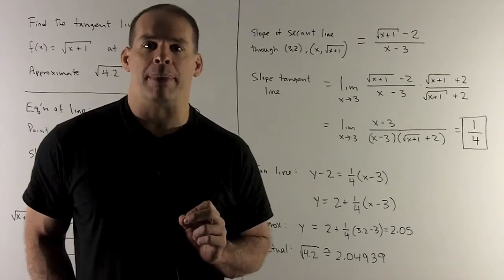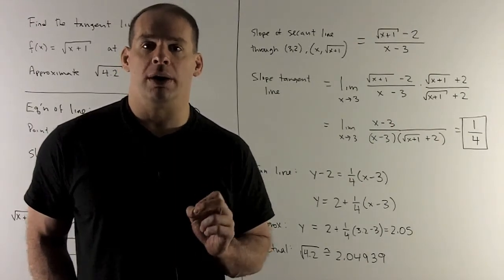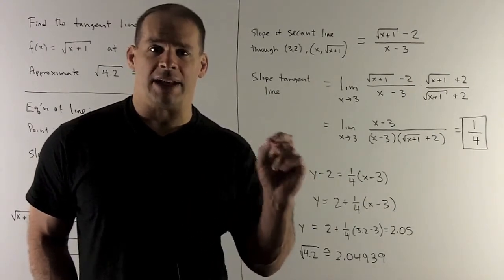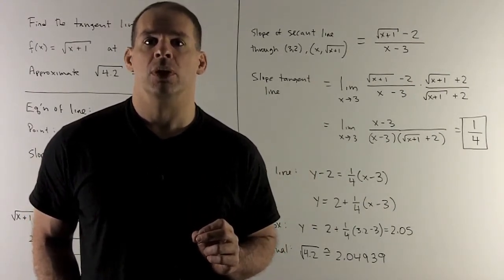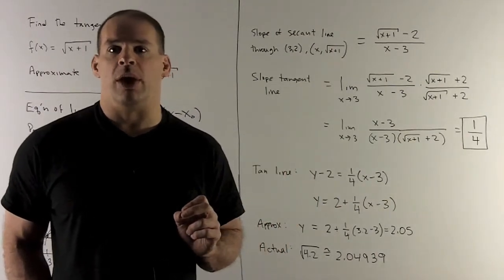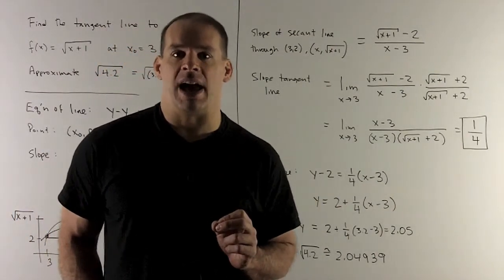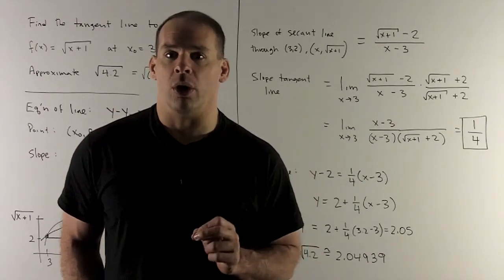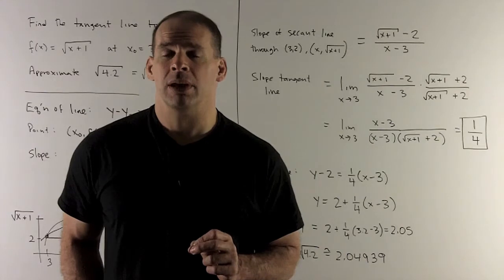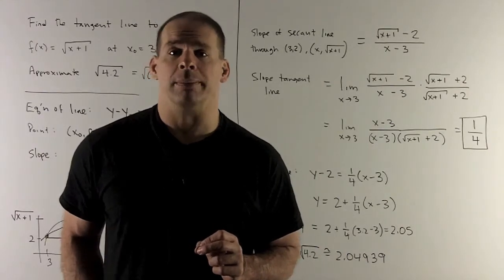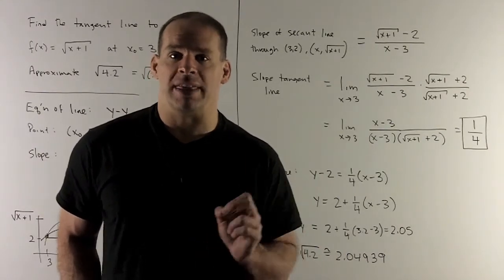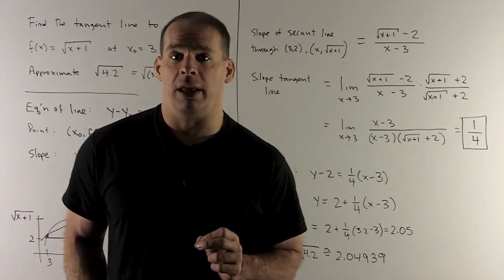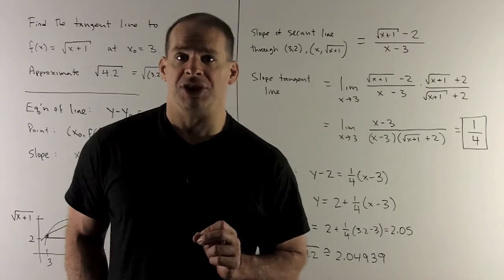So I want to multiply the top by √(x+1) + 2. But since I need to counter that, we're going to multiply by that term over itself. Once I do that, the top is going to rationalize out to x - 3. So the x - 3 is going to go away, and we're left with 1/(√(x+1) + 2) in the bottom. If I put 3 into that, I get 1/4. That's a perfectly good number, so that's my limit and that's the slope of our tangent line.